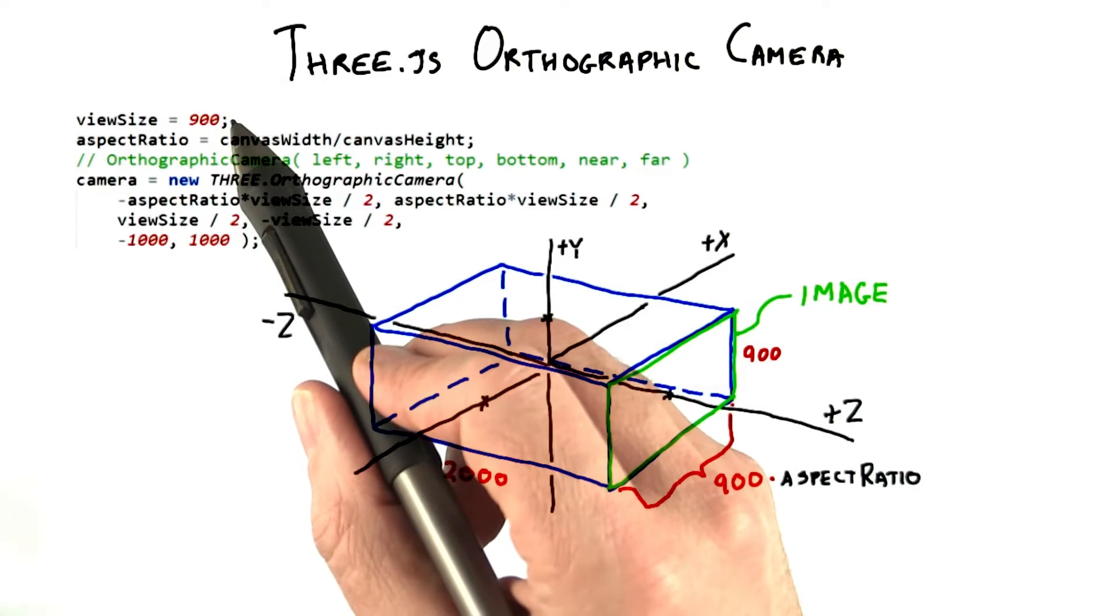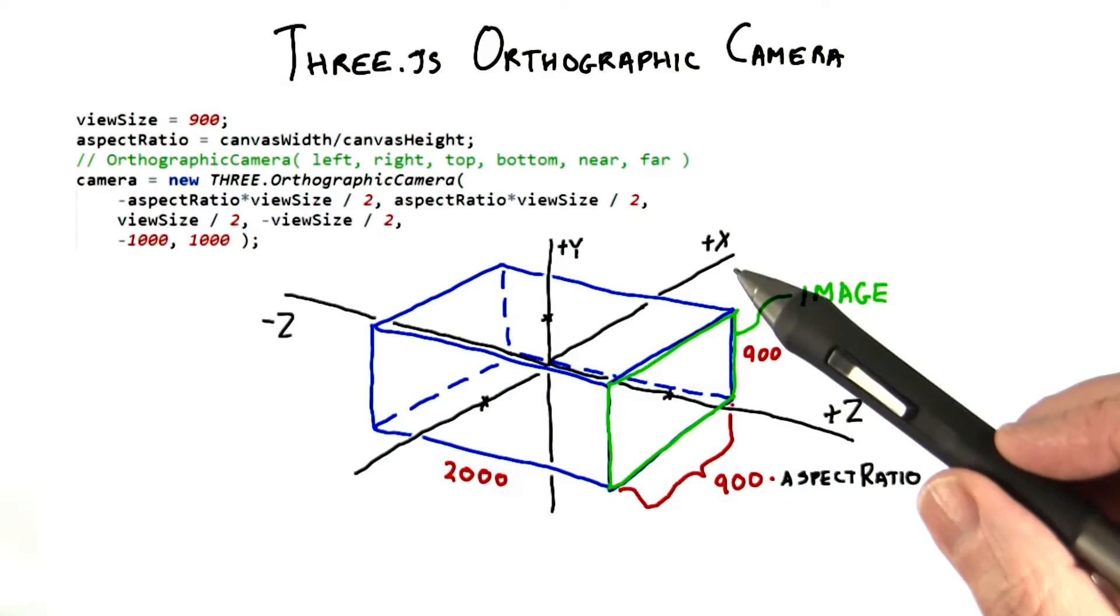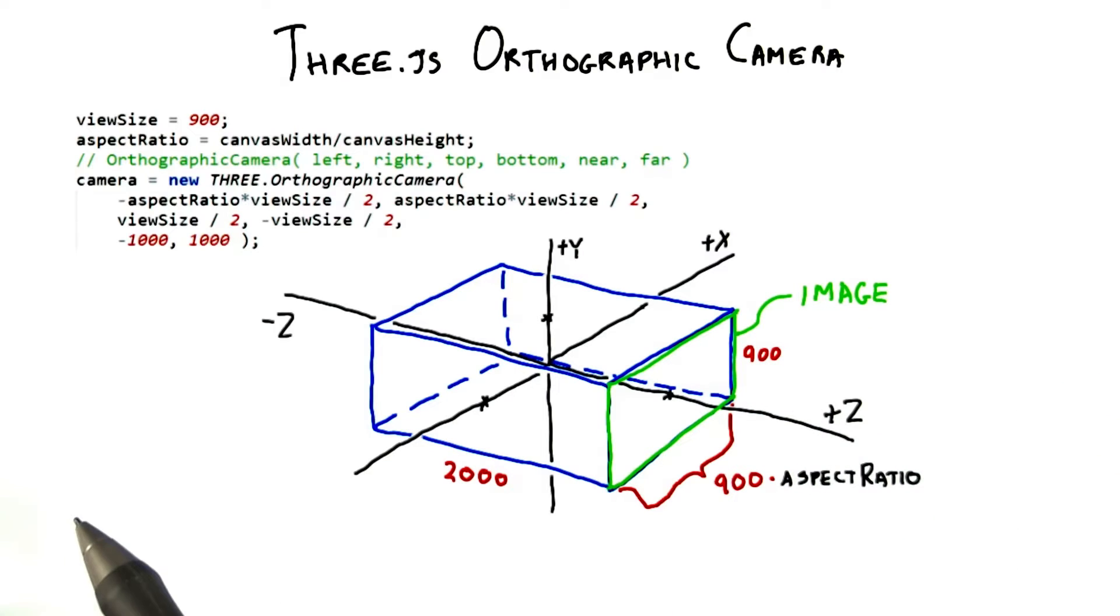For convenience, I define a view size, which is how much vertical space I'd like to fit in the view. The aspect ratio is just that, what's called the aspect ratio of the window. It describes how wide the view is compared to how high it is.